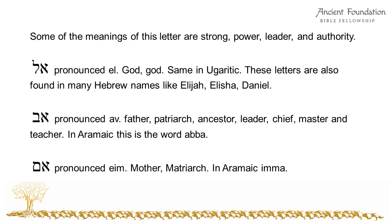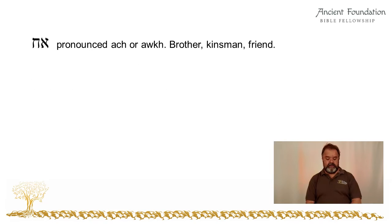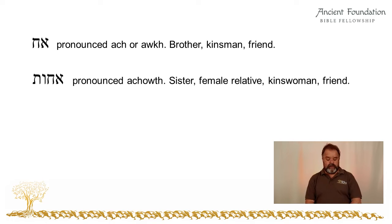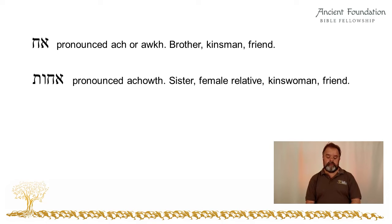Another word is Eam, and it means mother, matriarch. In Aramaic it is called Ema. Next is Ak, which is the word for brother, kinsman, or friend in Hebrew — again beginning with the letter Aleph. And our next word is Akoth, which has the meaning of sister, female relative, kinswoman, and friend.